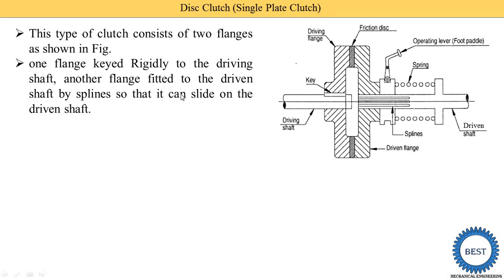Another flange is fitted to the driven shaft. This is called the driven flange, and it is fitted on the driven shaft by splines. Here you see, there are various slots — these are called splines — and on the splines, this driven flange is installed. The driven flange is able to slide on these splines. The conclusion is: the driving flange is the fixed one, and the driven flange slides on the splines provided on the driven shaft.